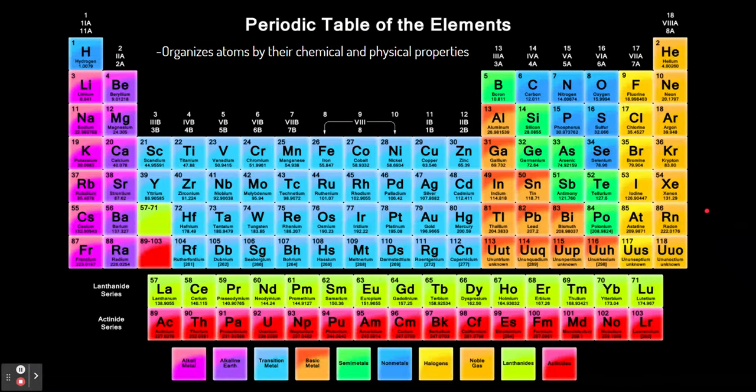We also talked about the periodic table of the elements. This periodic table organizes the different types of atoms or elements based on physical and chemical properties. Now the periodic table has some specific information on it that we're going to explore right now.